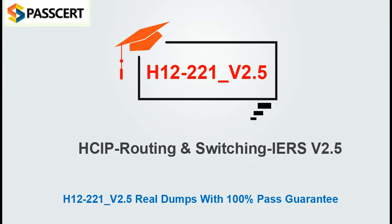Passert Team New updated the latest HCIP Routing and Switching IERS V2.5 H12-221-V2.5 dumps, which cover real questions and answers for you to practice so that you can feel easy to pass your Huawei H12-221-V2.5 exam successfully. You also need to pass H12-222 and H12-223 exams together to get your HCIP Routing and Switching certification.